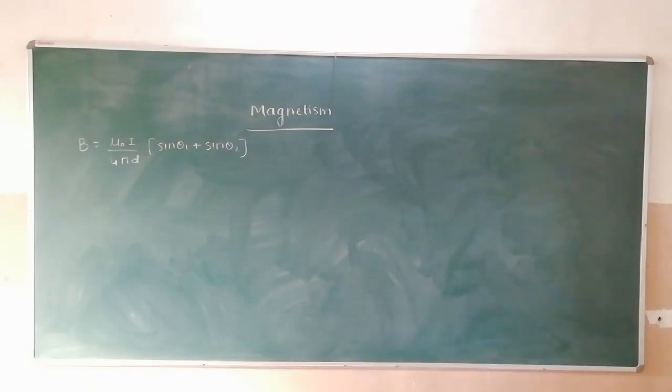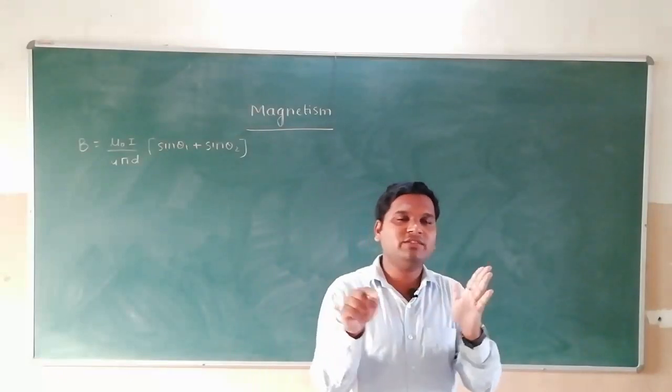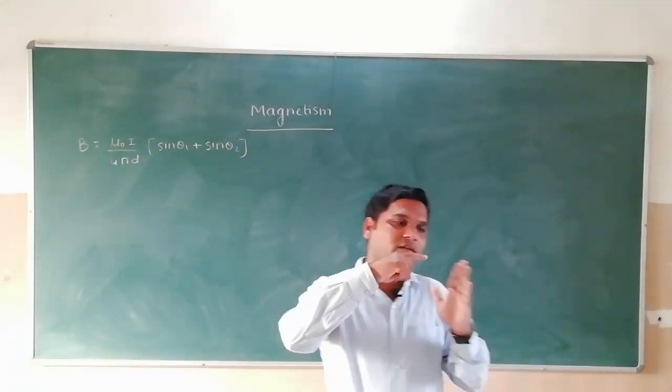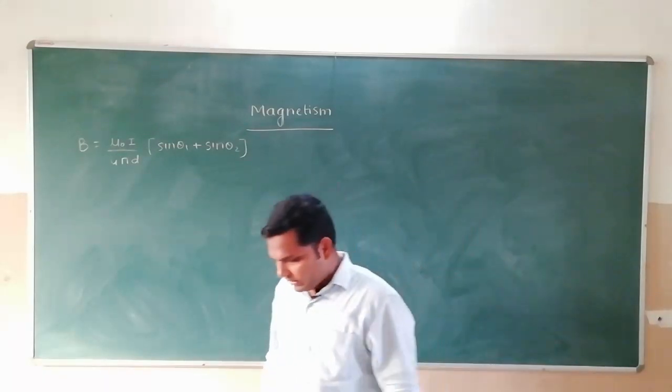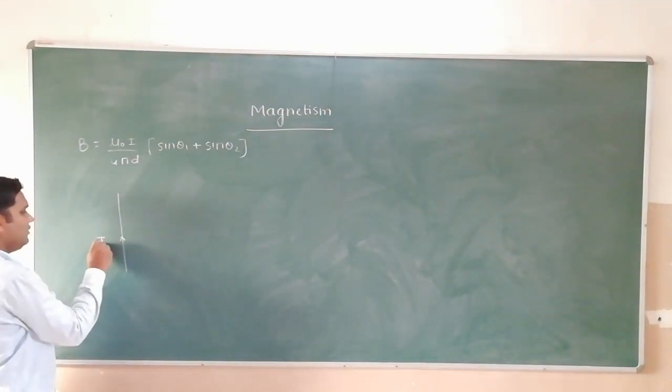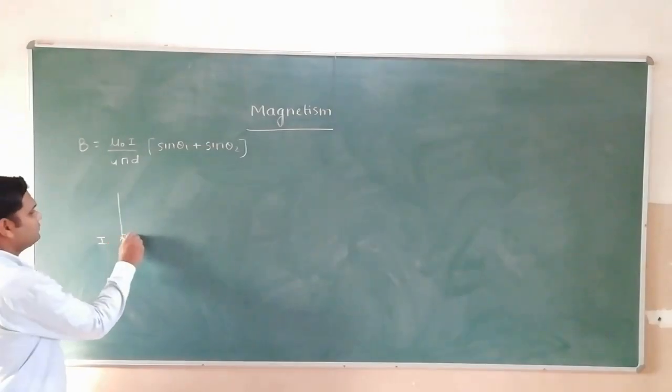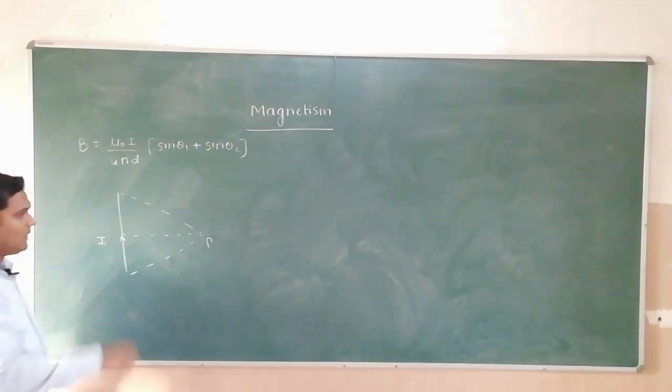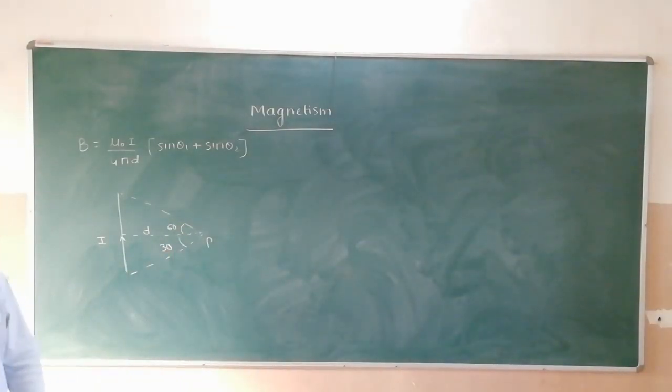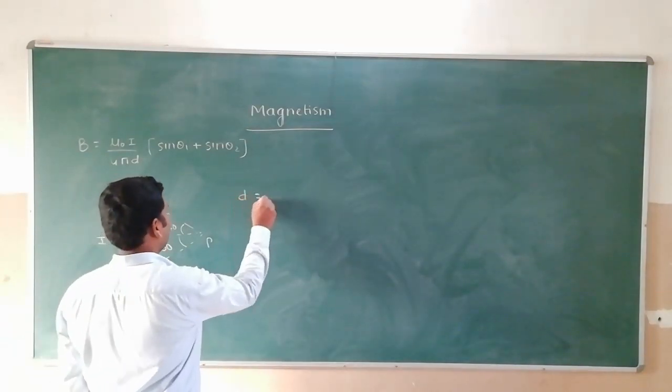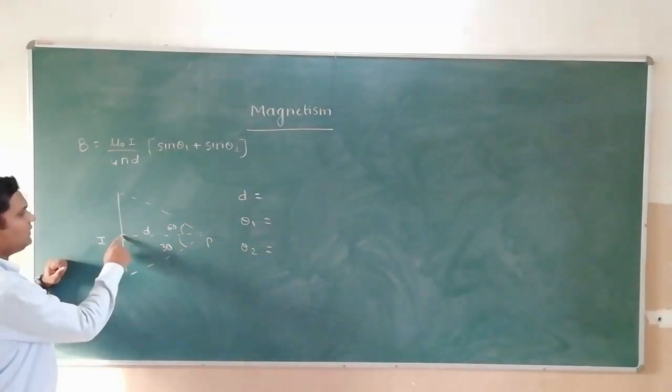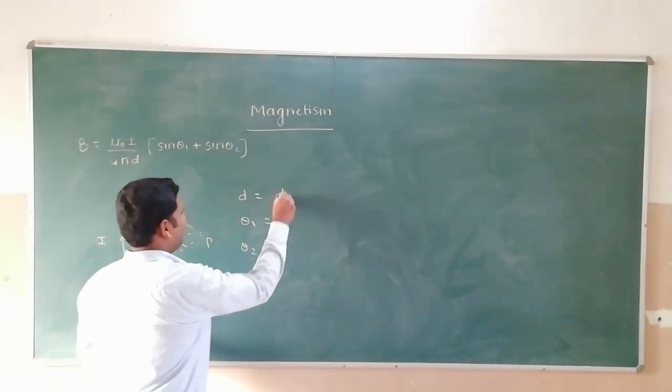We already know what D is - D is the shortest distance between the wire and point P. Theta 1 and theta 2 are angles measured from the shortest distance to each end. Now suppose you have a conductor with current i and point P, this is D, this is 60 degree and this is 30 degree. What is D, theta 1, and theta 2?